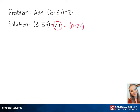So our first expression is equal to 8 minus 5i plus 0 plus 2i. Now we group the like terms: 8 and 0, and negative 5i and 2i, to add.